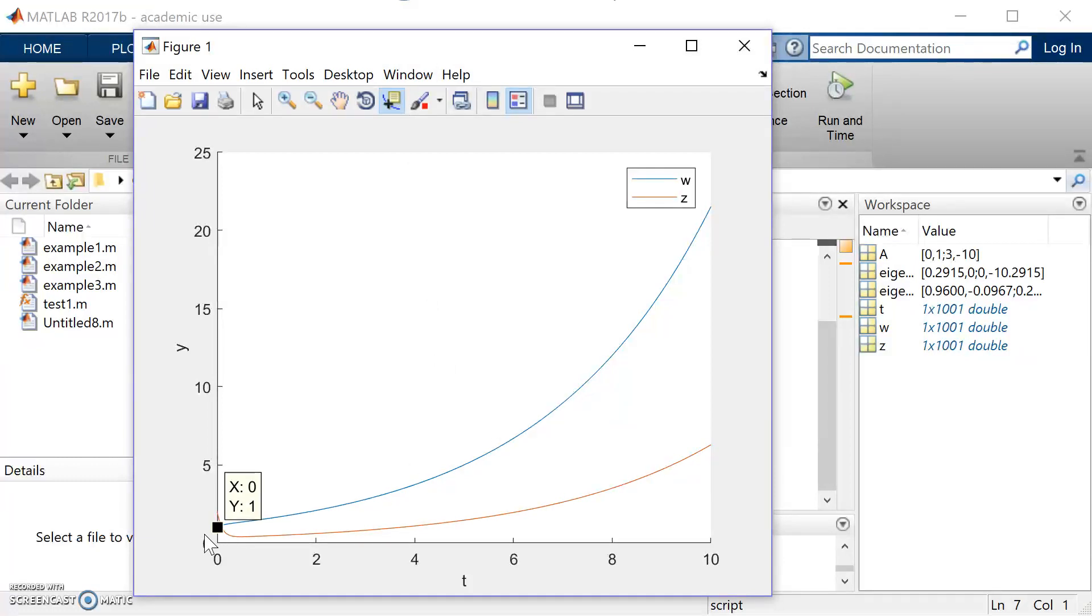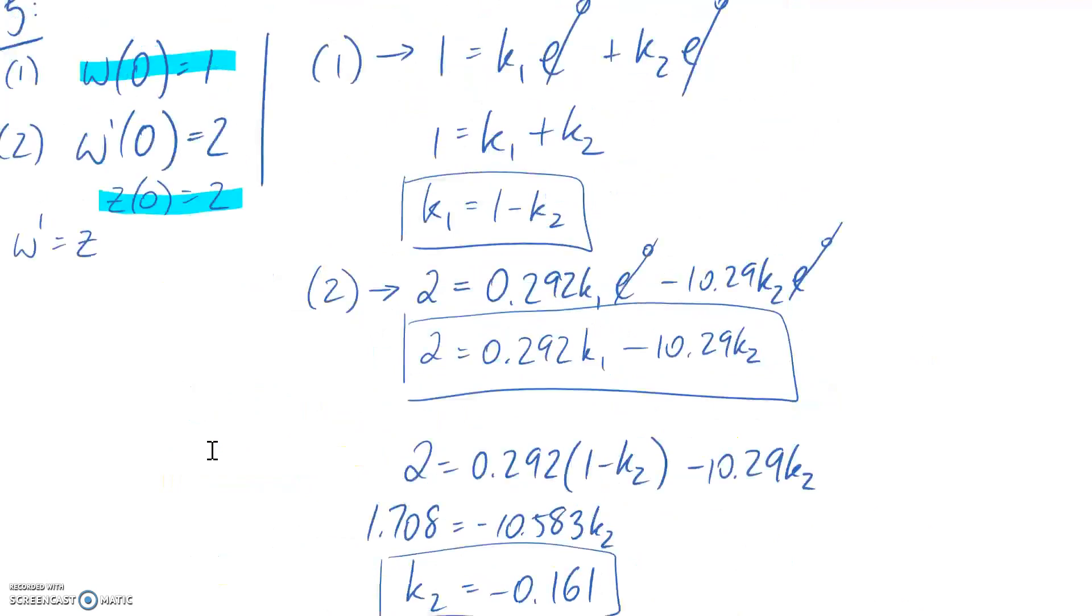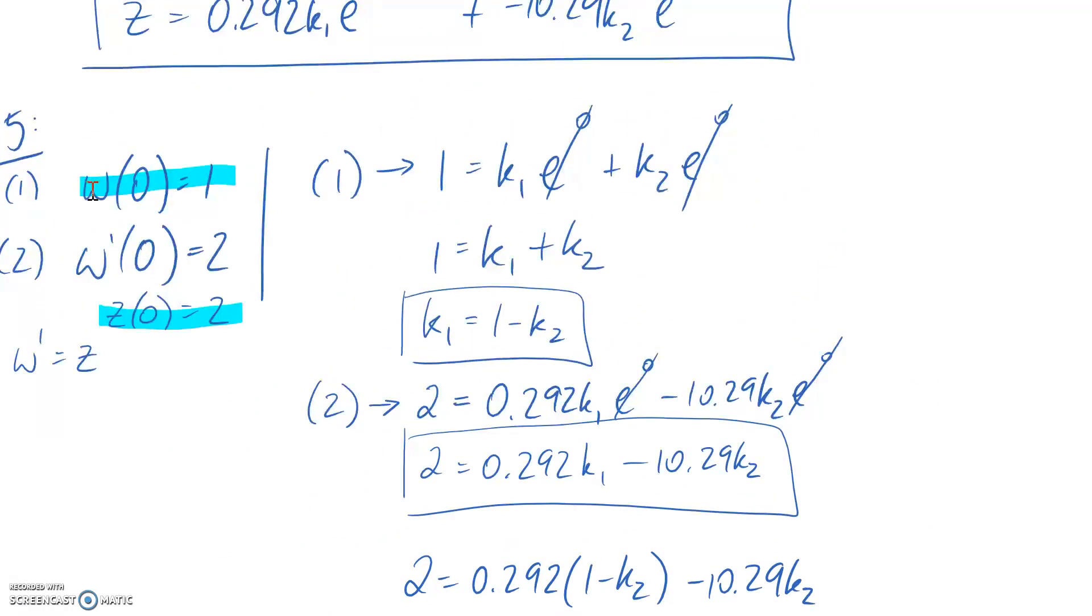What we can see is that at time equals 0, so X is calling it since that's the horizontal. The vertical is giving us a reading of 1, and if we go back and have a look at our conditions, that was indeed one of the conditions that we were trying to meet. You can see here W is equal to 1 when T is equal to 0.